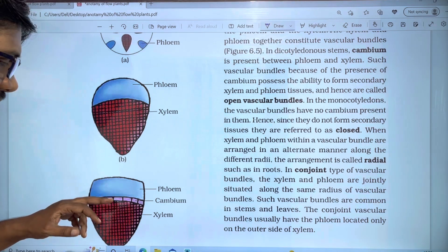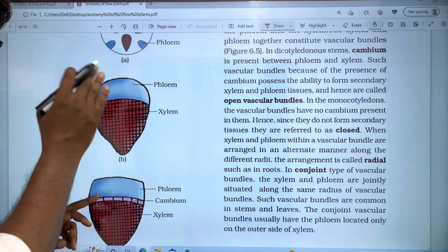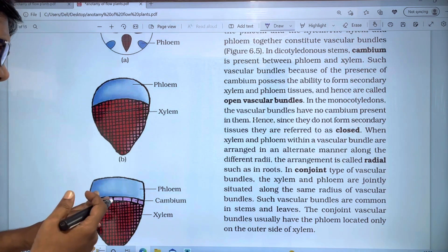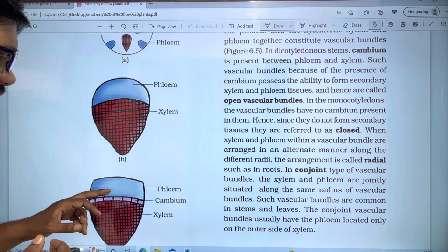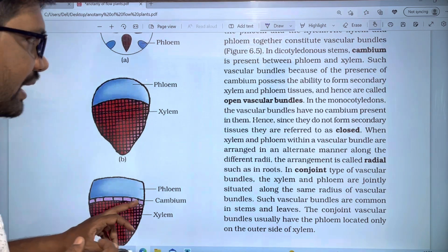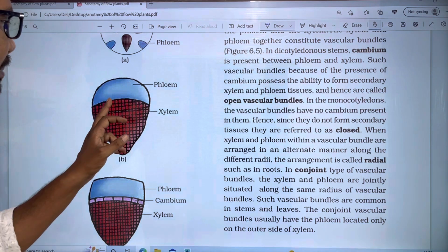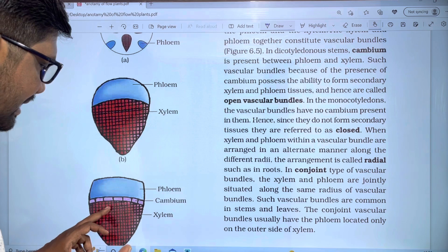When cambium is present, secondary xylem is produced. The secondary xylem is formed when primary xylem is present. With cambium, secondary xylem and secondary phloem are formed. Without cambium, the vascular bundles are closed.